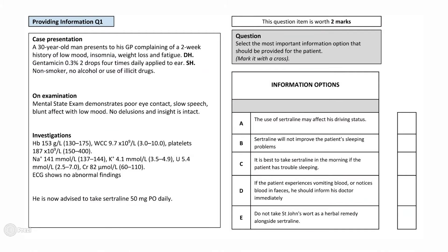Here we have our first question. A 30-year-old man presents to a GP complaining of ongoing low mood, insomnia, weight loss, and fatigue for over 2 weeks. No significant past medical history. He normally takes gentamicin ear drops. The patient does not smoke, drink alcohol, or use illicit drugs. His mental state exam demonstrates poor eye contact, slow speech, and a blunt affect with low mood. No delusions and insight is intact.